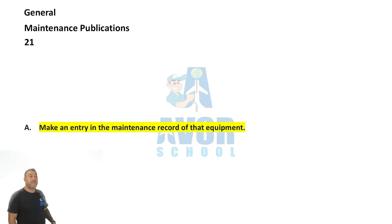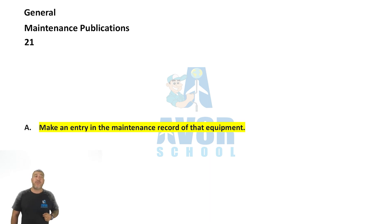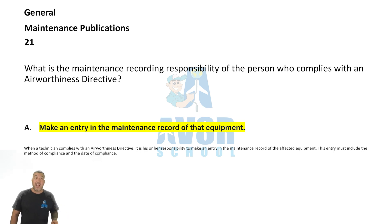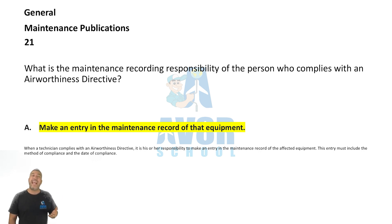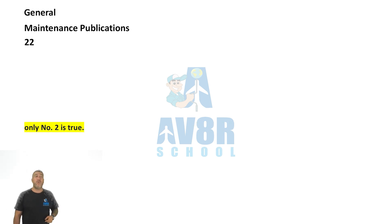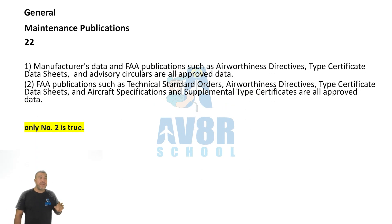Number 21: What is the maintenance recording responsibility of a person who complies with an airworthiness directive? It is their responsibility to make an entry in the maintenance record of that equipment.